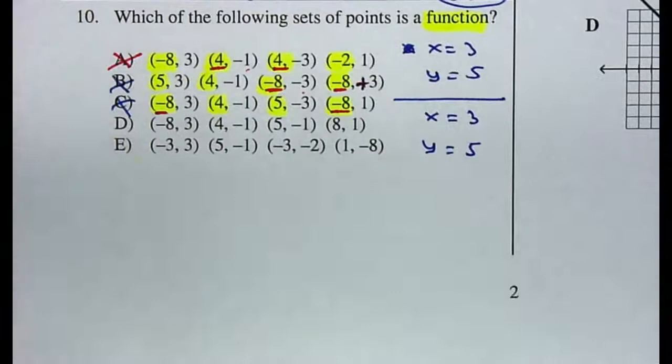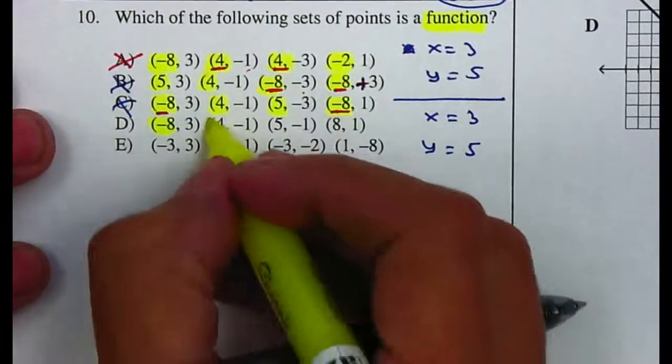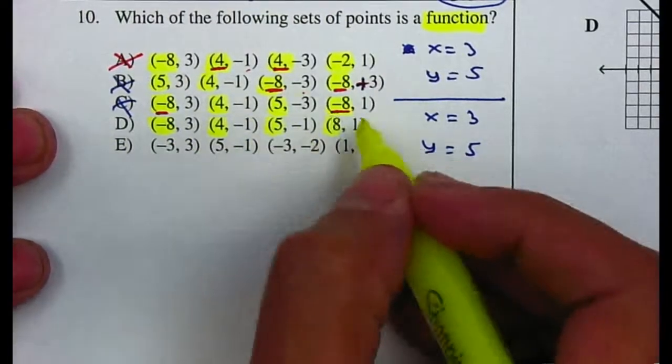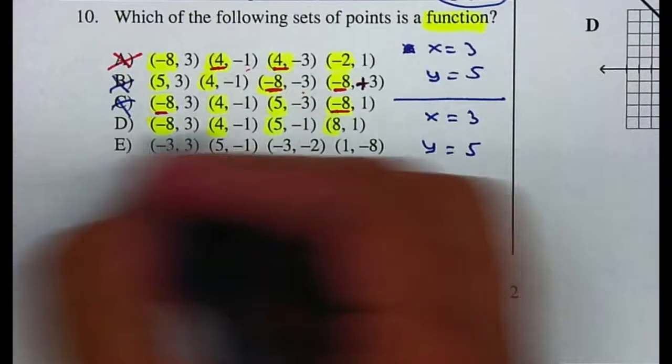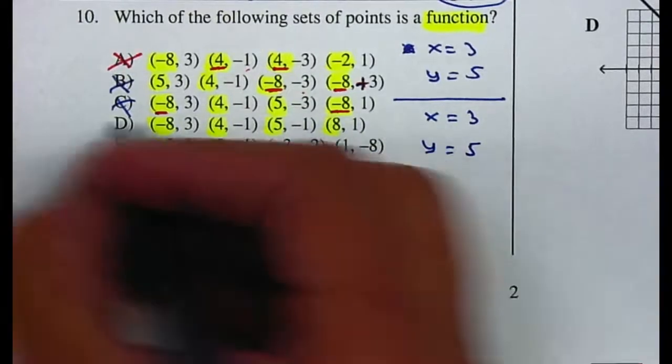On letter D, we have a negative 8, a 4, a 5, and an 8. So therefore, they have different x values, so that one's fine.